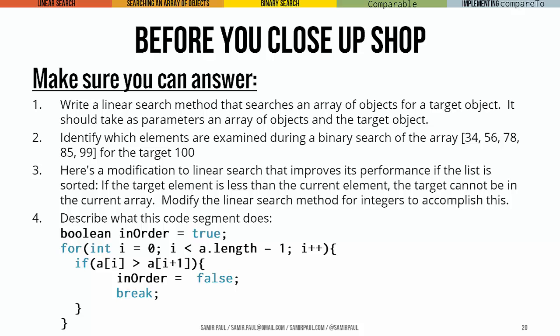Which elements would you examine if you were searching for the value 100 in the array 34, 56, 78, 85, 99? Then think about this modification to linear search that makes it perform a little better if the list is sorted. If the target element is less than the current element, the one you're looking for is less than the current one you're considering, then that means that the target can't actually be in the current array assuming that the list is sorted. So modify the linear search method that we looked at earlier in lecture so that it can accomplish this.